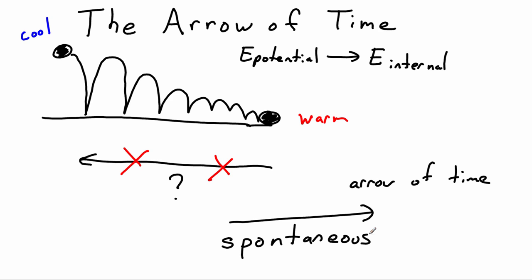So we have to ask ourselves: why is a ball going from high potential energy to high internal energy spontaneous, but the reverse process is not spontaneous? Why is that? Because obviously it has nothing to do with conservation of energy.